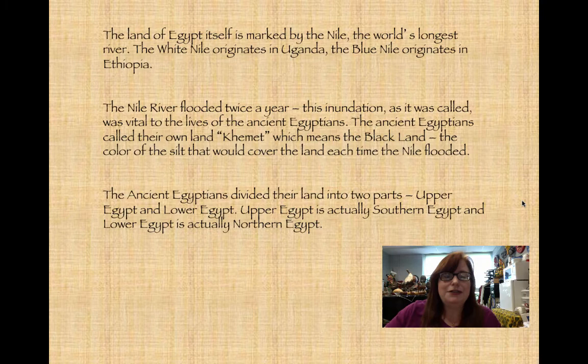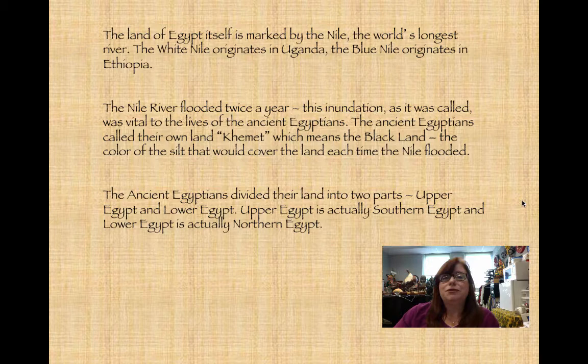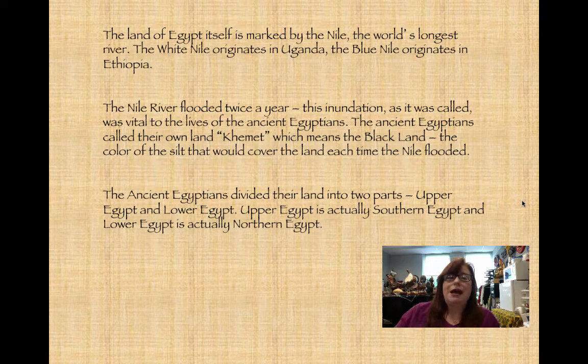I'm going to talk first about the most important geographic feature of ancient Egypt, which was the Nile River. The Nile is the world's longest river. It has several tributaries — a White Nile that originates in Uganda, a Blue Nile that originates in Ethiopia. Everything around the Egyptians was desert except for the land around the Nile River, and it flooded twice a year.